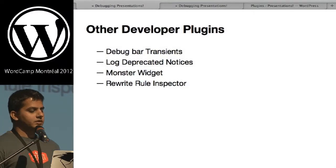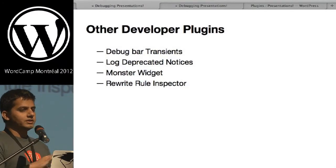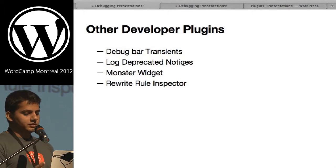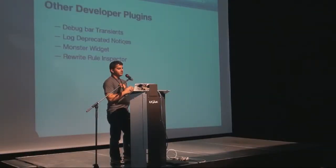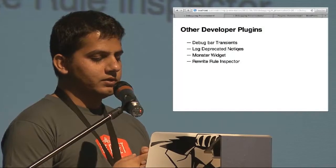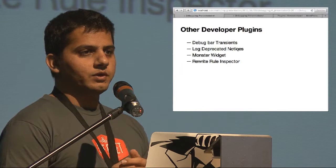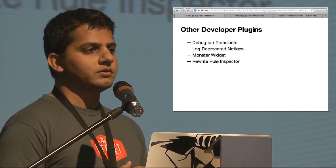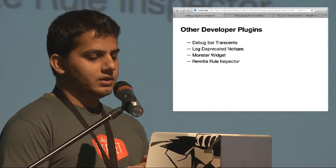There are lots of other developer plugins out there. Debug Bar Transients lets you examine transient objects saved in the database. Log Deprecated Notices tracks deprecated functions being used in your theme or plugins, saving them to a custom post type. Monster Widget is great for theme developers — it gives you one widget with all WordPress core widgets built in, making it easy to test that your styling looks correct. Rewrite Rules Inspector breaks down all the rewrite rules WordPress knows about and has a handy flush rules button so you don't have to go to the permalinks page.